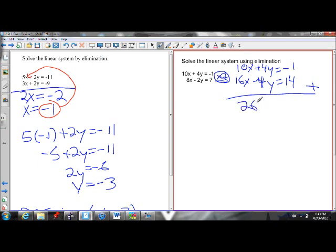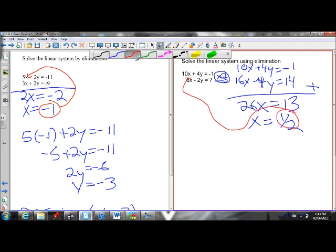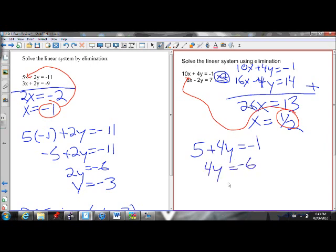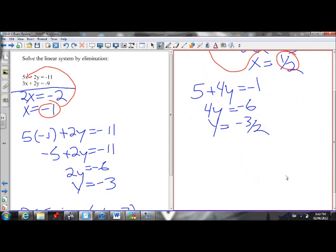So 10x plus 16x, 26x. The y is eliminated. Negative 1 plus 14 is 13. Isolate the x. 13 over 26 is a half. Plug that a half in for x into either equation. I'll put it into the first one for x, and it'll tell us what y is equal to. So 10 times a half is 5 plus 4y equals negative 1. Isolate the y, so I'm going to get 4y equals negative 6. And then divide by 4, I get negative 3 halves is my y value. When I put it into lowest terms, negative 6 over 4 is negative 3 over 2. I now have my point of intersection. My point of intersection of the two lines is 1 over 2, negative 3 over 2. There's my point of intersection.